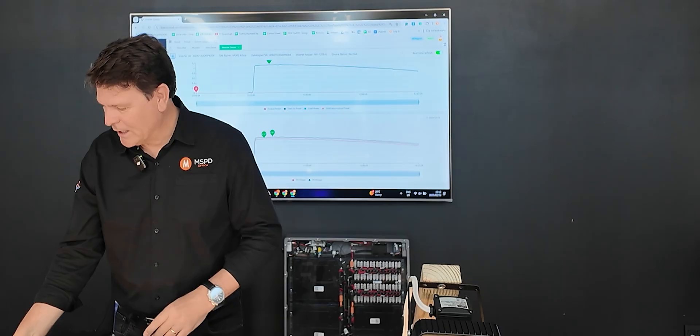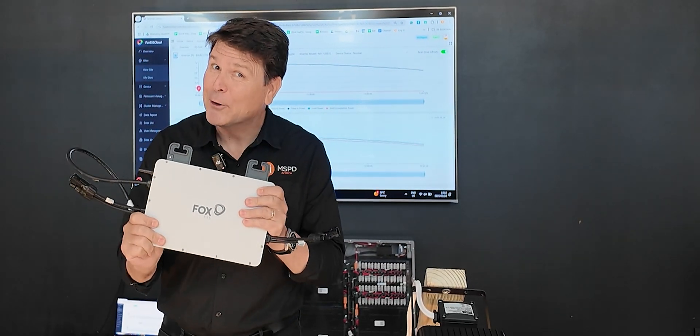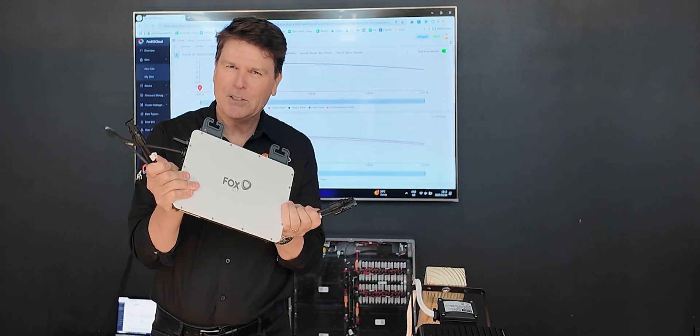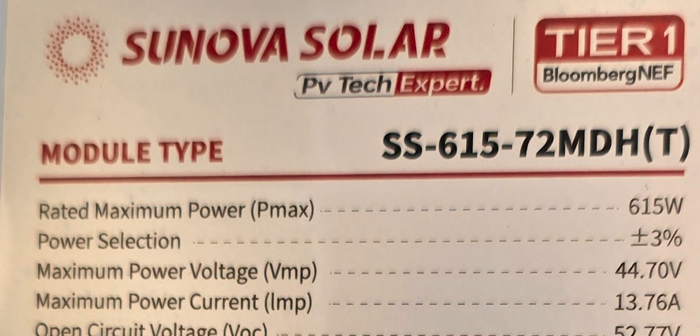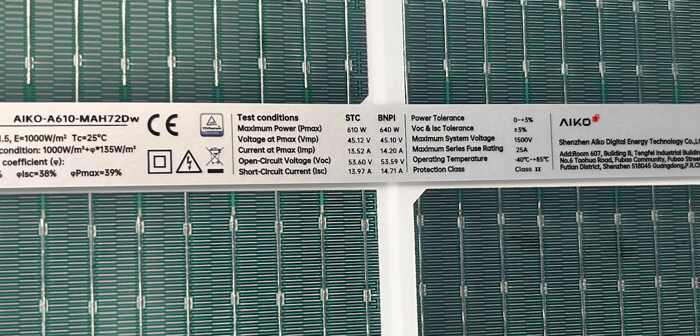So what we've done is we've taken one of our new magnificent Fox micro inverters that have two MPPTs, MPPT1 and MPPT2, where we've taken a traditional 615 watt N-type solar panel and compared it to a 610 from IKO.